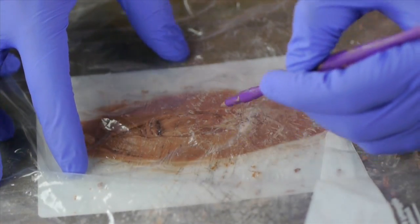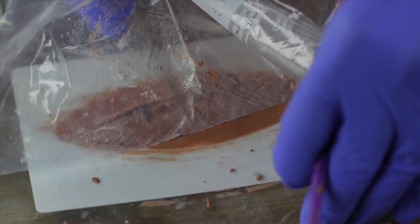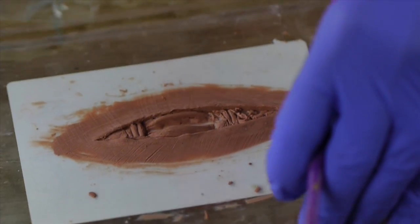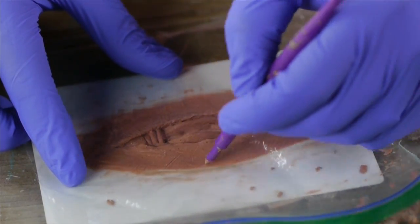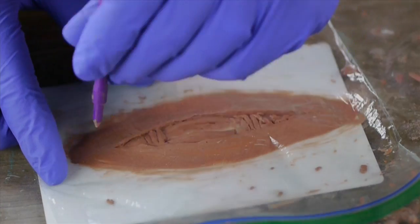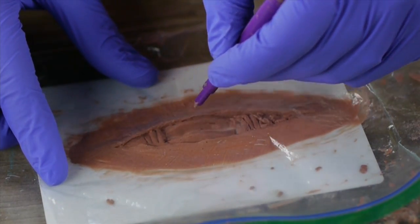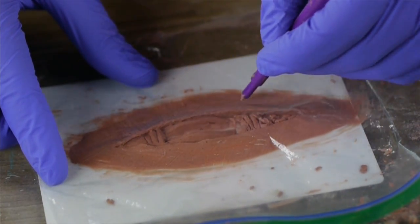Don't use anything too sharp or you'll pierce through the bag and ruin your sculpt. Practice varying levels of pressure and allow the lines to cross organically. You can also reference macro photos of skin texture on the internet or in anatomy books.